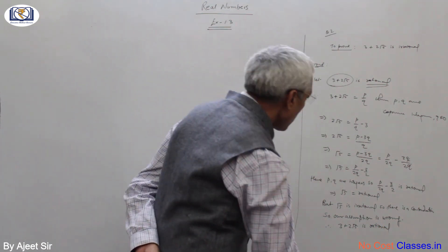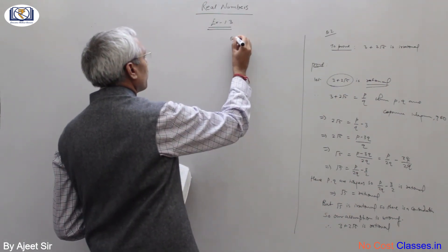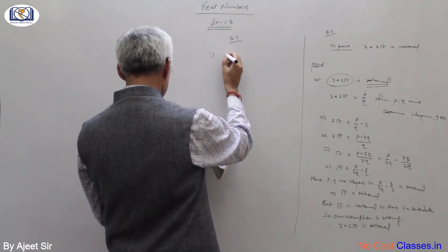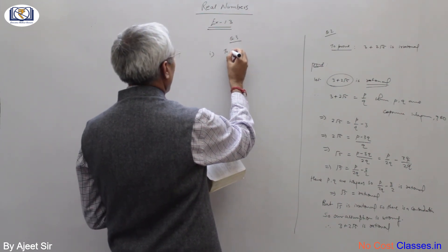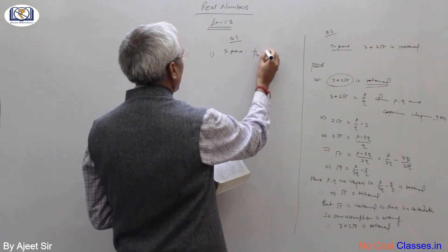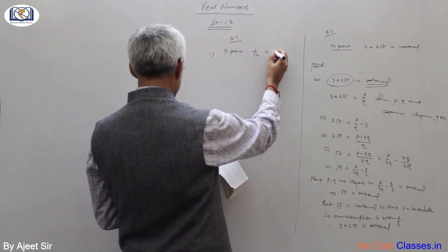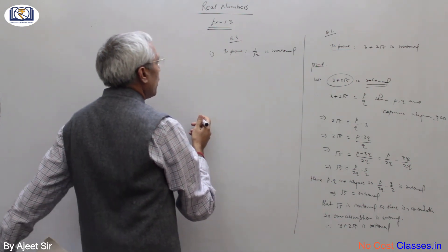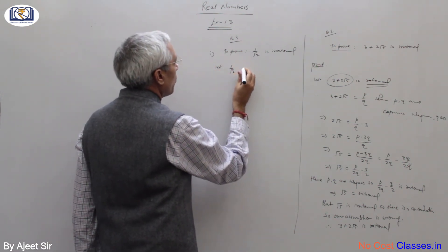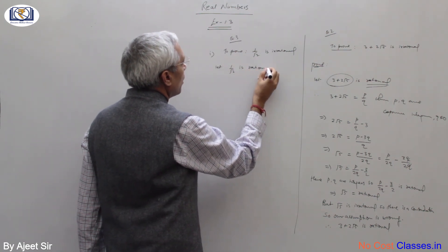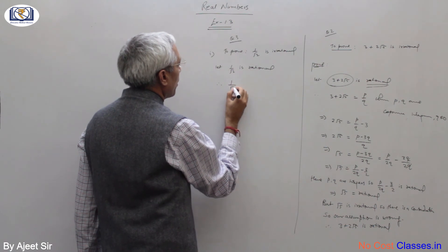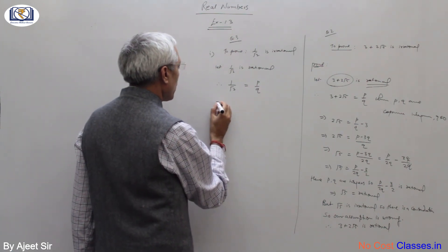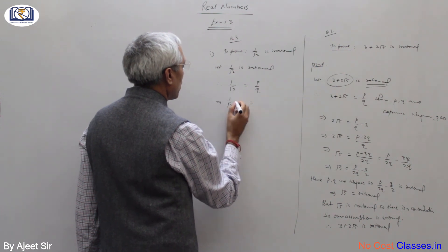Question number three has three parts. For part one: prove that 1 by root 2 is irrational. Same way — let 1 by root 2 be rational. Therefore 1 by root 2 can be written in the form of p upon q where p and q are co-prime integers.